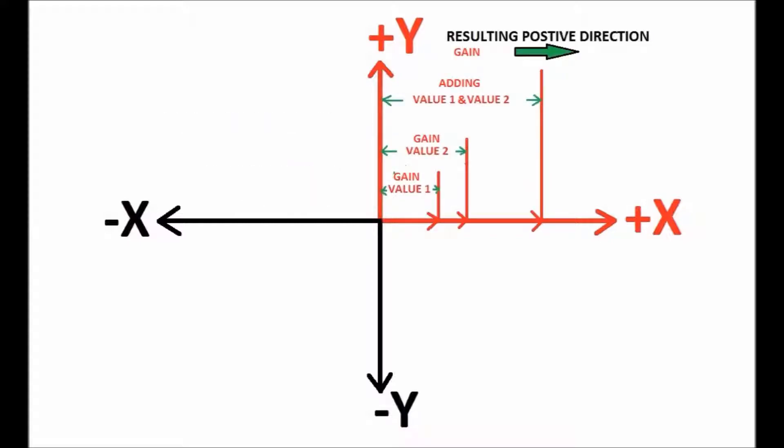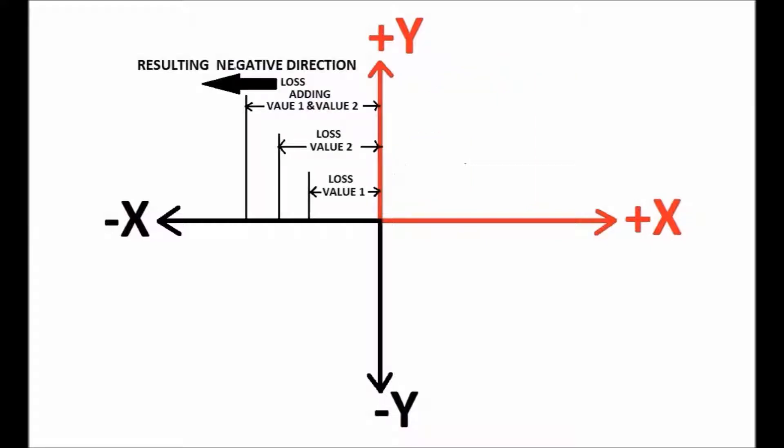Adding gain means adding two positive values results in positive, which indicates we are in the gain direction. Adding losses means adding negative values results in negative, which indicates we are in the loss direction.